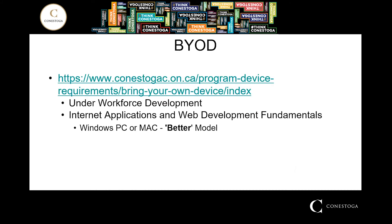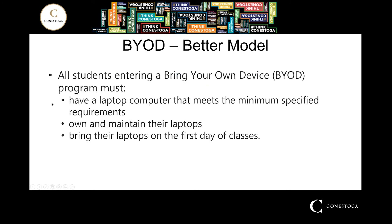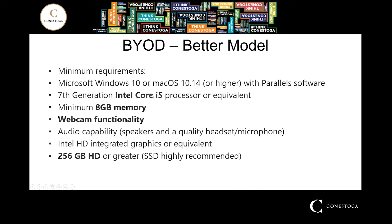This is a BYOD — bring your own device — program. There's a link you can select that takes you to a listing of programs running with BYOD. You'll find our program under workforce development and internet applications and web development fundamentals. We are listed as a 'better' model on the good-better-best scale. It should be a laptop — not a desktop. Key recommendations: at least an Intel i5 processor (an i3 could work but i5 is recommended), at least 8 gigabytes of memory, a webcam, which will be essential, and at least 256GB of hard drive space.